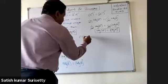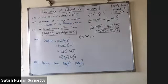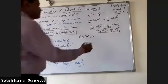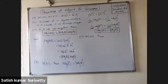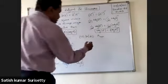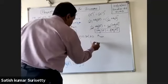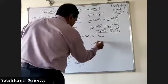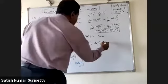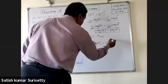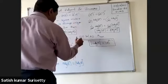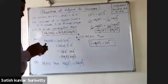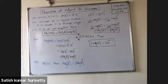If A is a non-singular square matrix of order n, then determinant of adjoint of A equals determinant of A to the power of n minus 1.